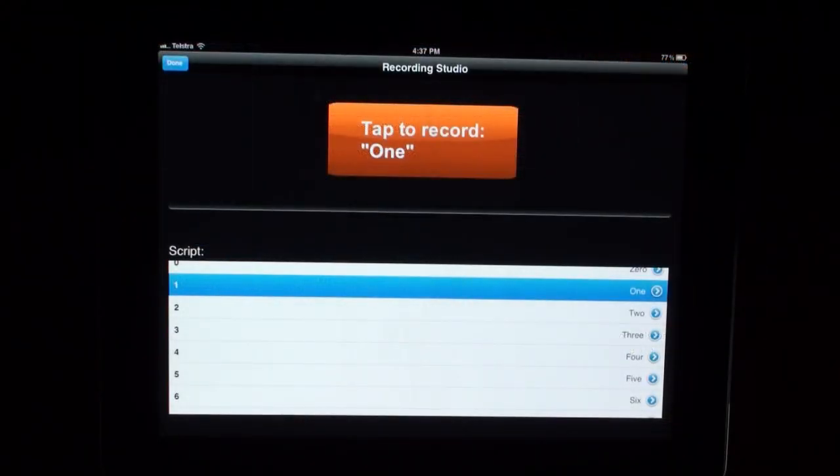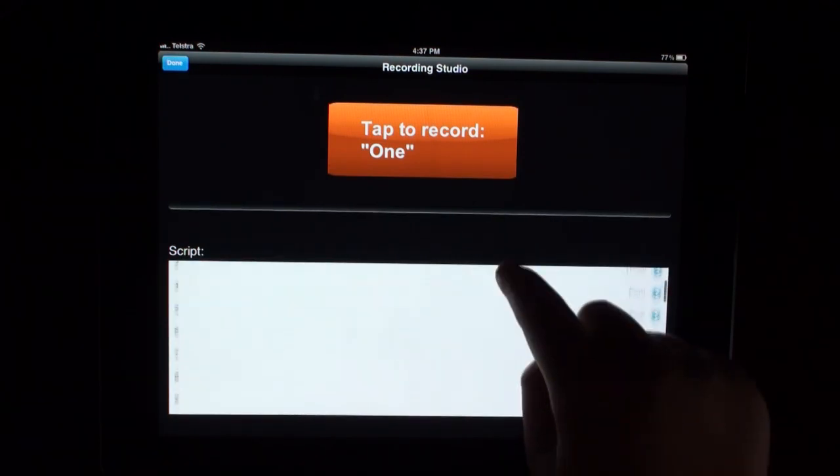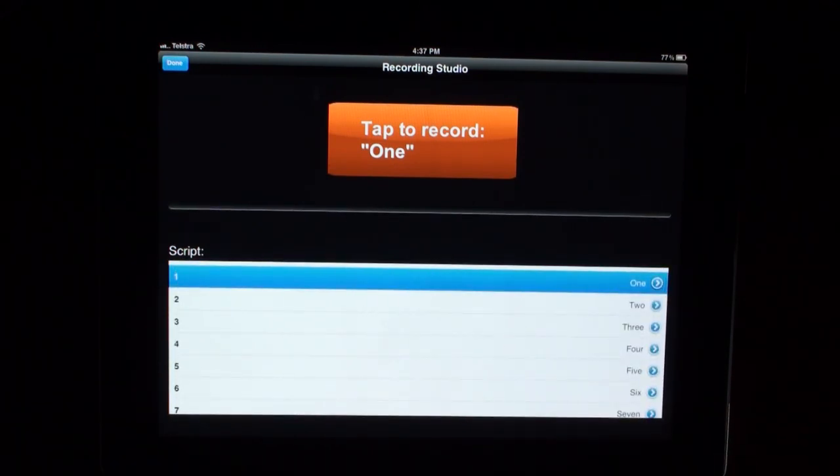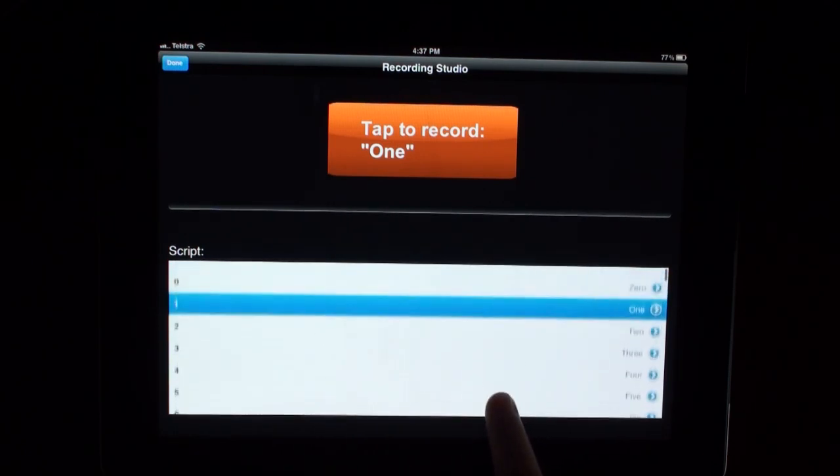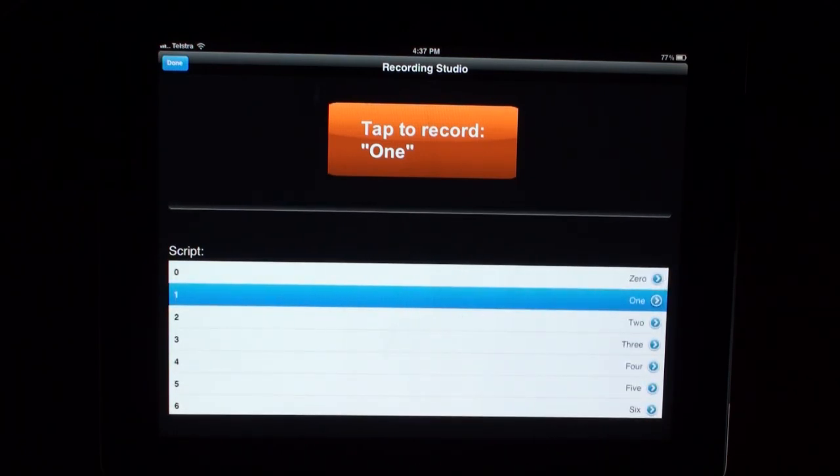This is the recording studio. Here is a script that you will need to record. For this video we are going to only record 3 numbers. 1, 2 and 3. Start by clicking on the number that you will be wanting to record.